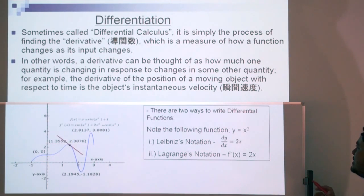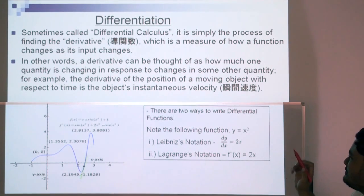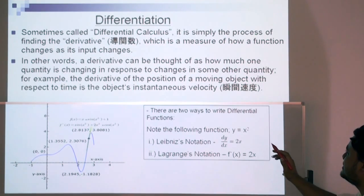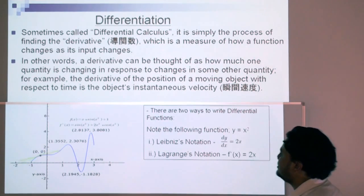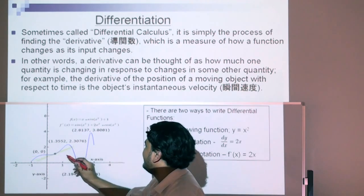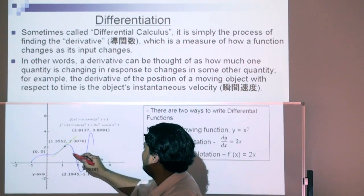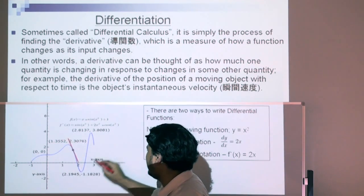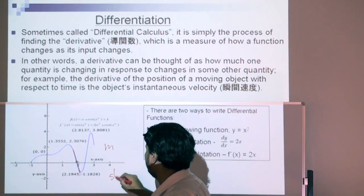Which is a measure of how a function changes as its input changes. In other words, a derivative can be thought of as how much one quantity is changing in response to changes in some other quantity. For example, the derivative of the position of a moving object with respect to time is the object's instantaneous velocity.